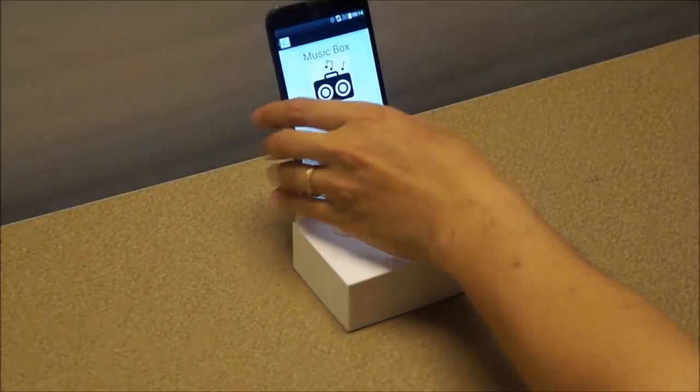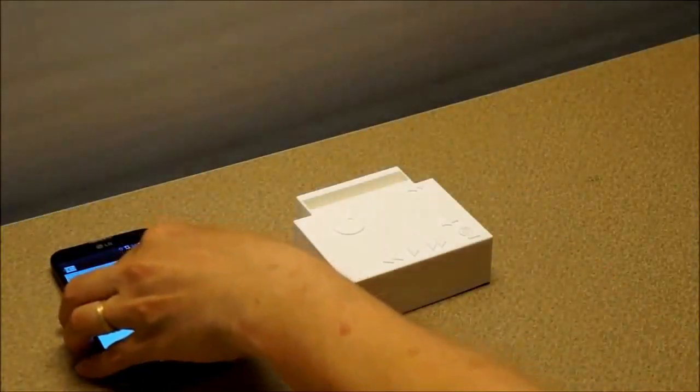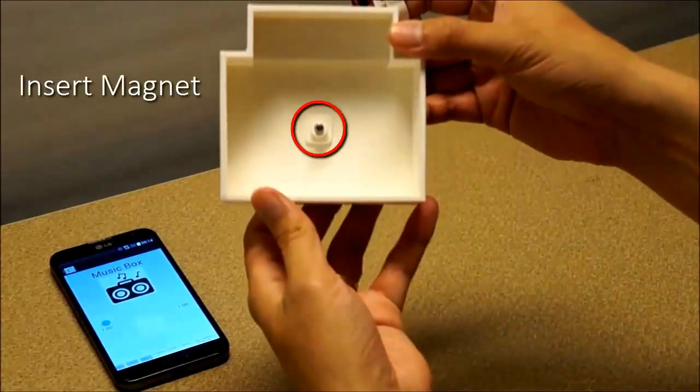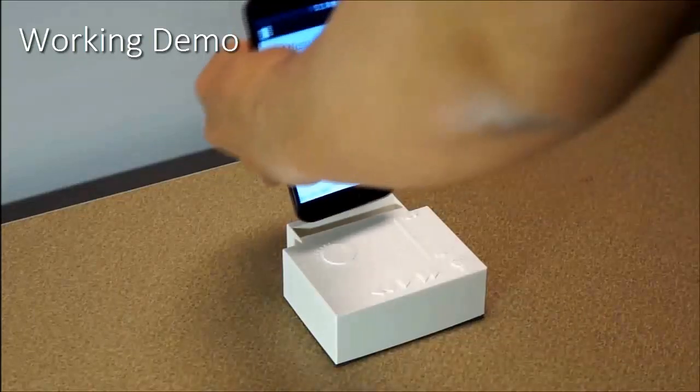Using our approach, we support rapid prototyping of interactive objects. First, we embed a magnet in the dedicated magnet holder generated by the toolkit. Here is a working music box.